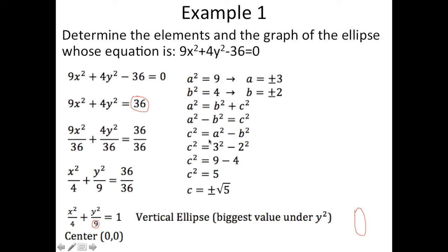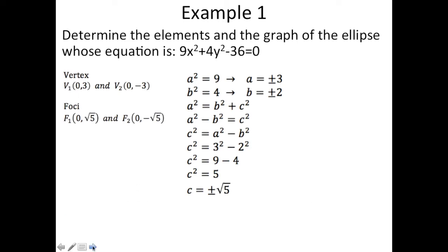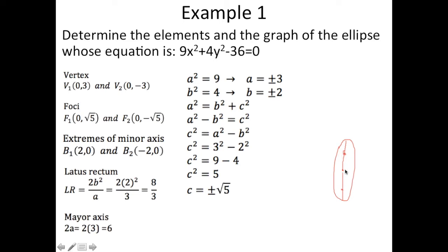Now with the values of a, b, and c, we can find all elements. For a vertical ellipse with center (0,0), the vertices move a units up and down: V1 = (0, 3) and V2 = (0, −3). The foci are at (0, √5) and (0, −√5). The extremes of the minor axis move b units left and right: (2, 0) and (−2, 0).